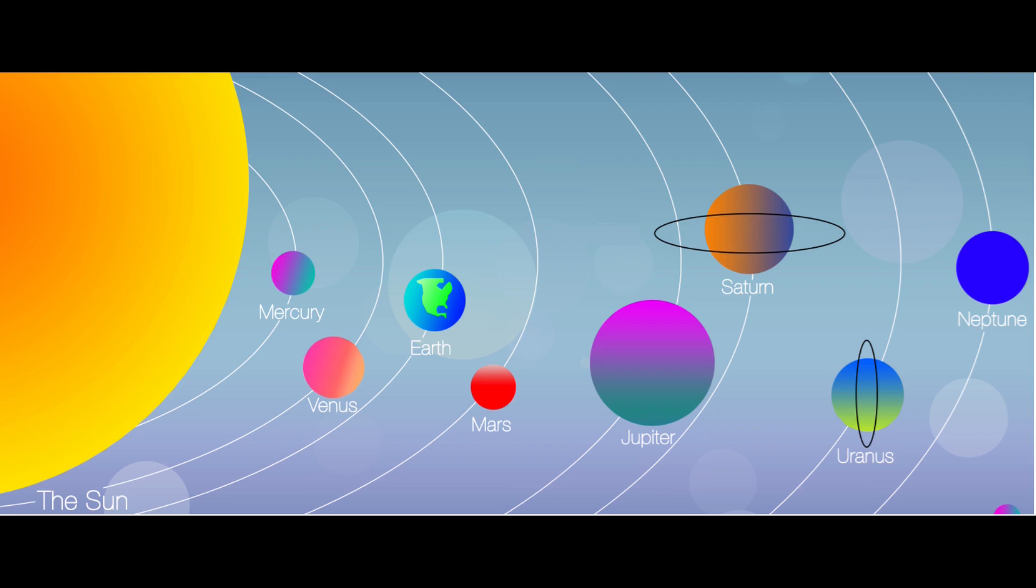Fifth one is Jupiter. This is the biggest planet in the whole solar system. It's a gas giant and has a huge storm called the Great Red Spot that's been blowing for hundreds of years.